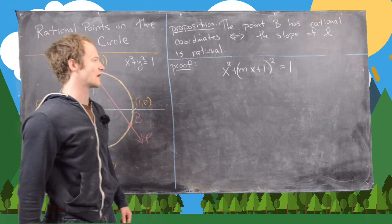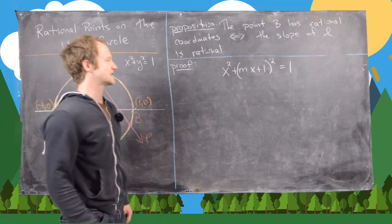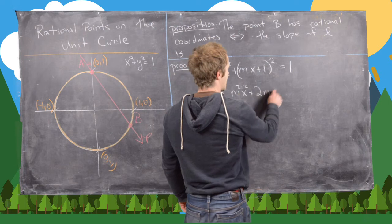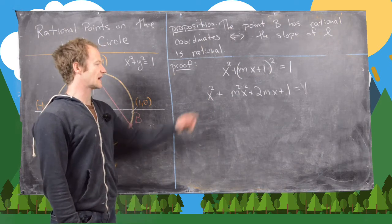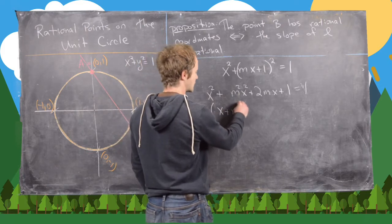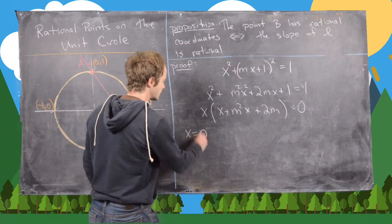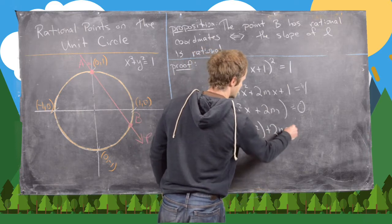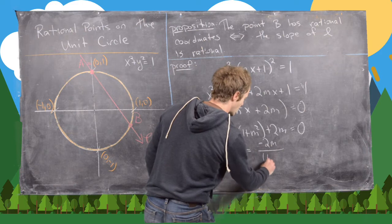Expanding x² + (Mx + 1)² = 1 gives x² + M²x² + 2Mx + 1 = 1. Subtracting 1 from both sides and factoring out x yields x(x + M²x + 2M) = 0, or equivalently x · (1 + M²)x + 2M) = 0. This gives two solutions: x = 0, or x = −2M / (1 + M²).